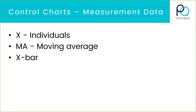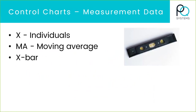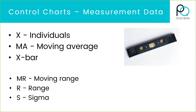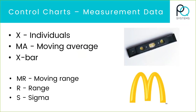The common types of charts for measurement data are individuals, X-bar, and sometimes moving average. Think of those charts as the central tendency charts. And then for the variability charts, moving range, range, and sigma are the three most common types. Think of the Big Mac as having low variability or high consistency. We're going to spend a lot of this webinar talking about measurement data control charts.